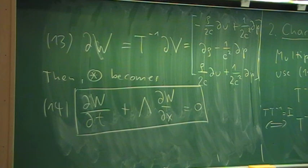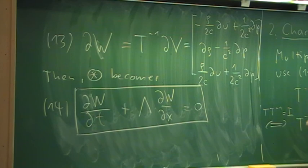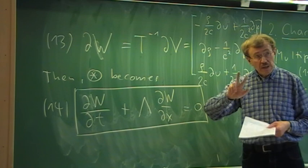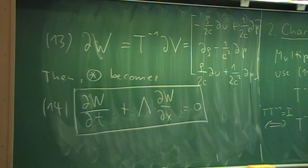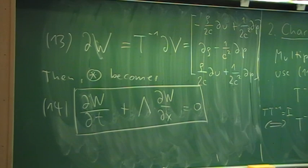If we take the coefficients locally constant, we would have three linear advection equations, which we can solve easily. We will continue with this after the break. By this technique, we can diagonalize the problem and get three scalar equations. That is the main point.